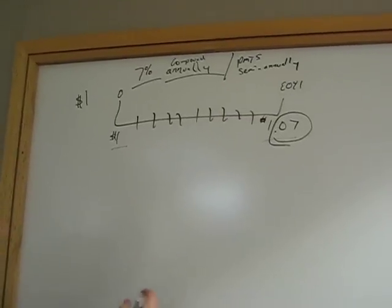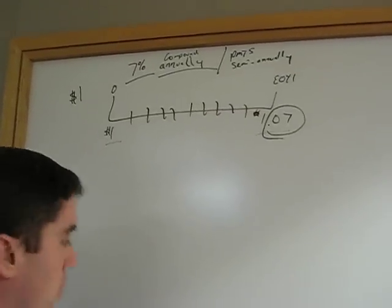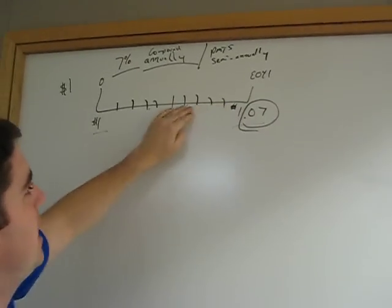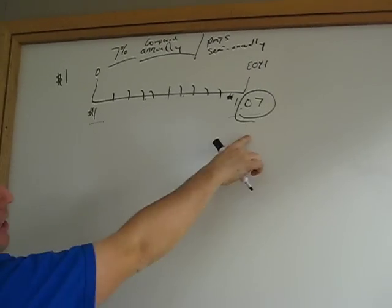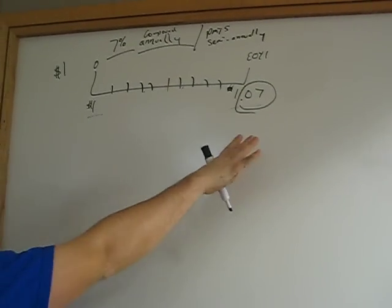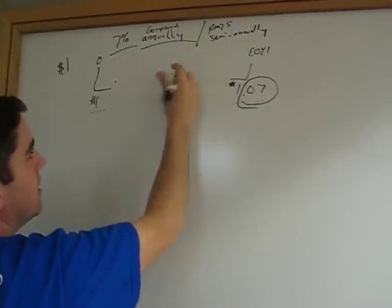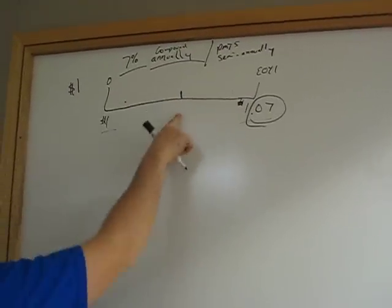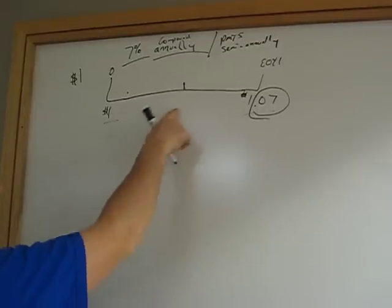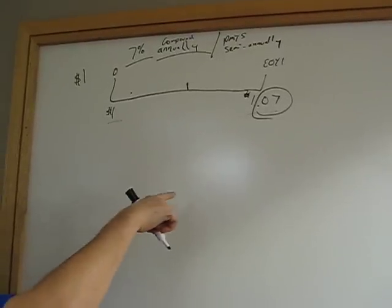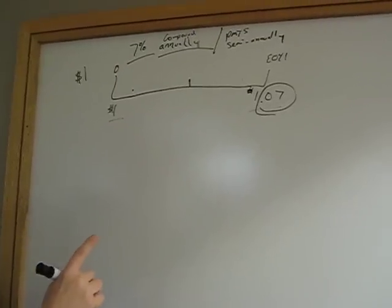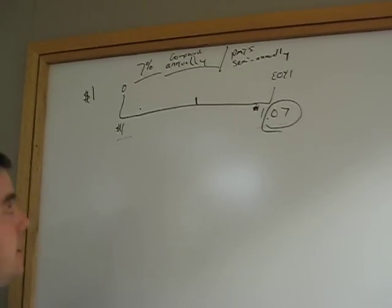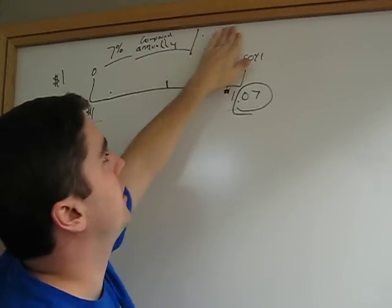So now the question is, what would the interest rate be if I had payments semi-annually? So instead of getting the $0.07 all at the end of the year, how much do I get if it was semi-annual? And the thing we need to figure out to get that is we need to figure out what's that effective periodic rate. Because it's going to compound the rest of the year based on whatever is subtracted?